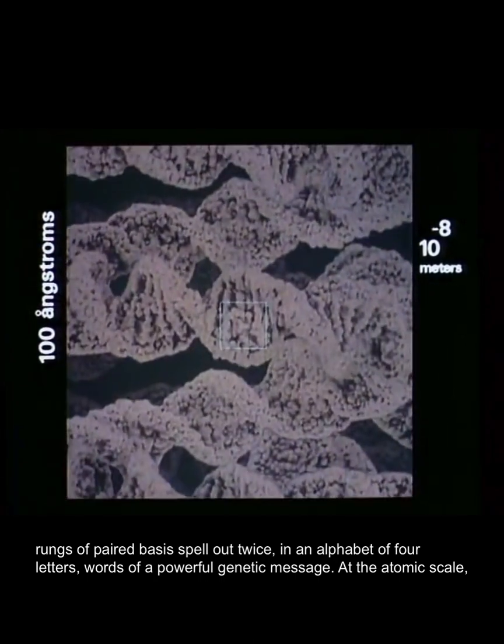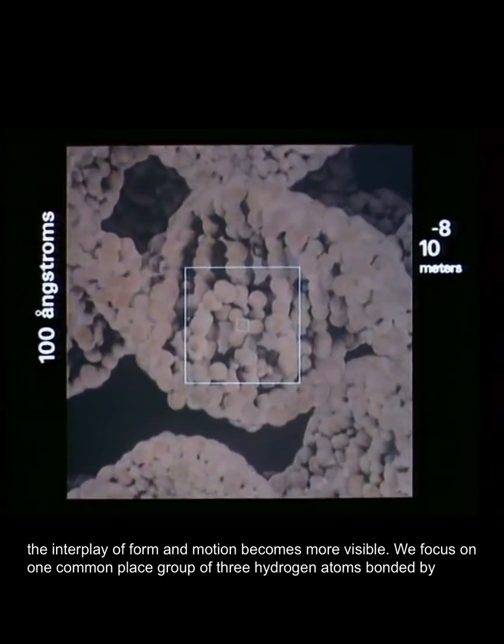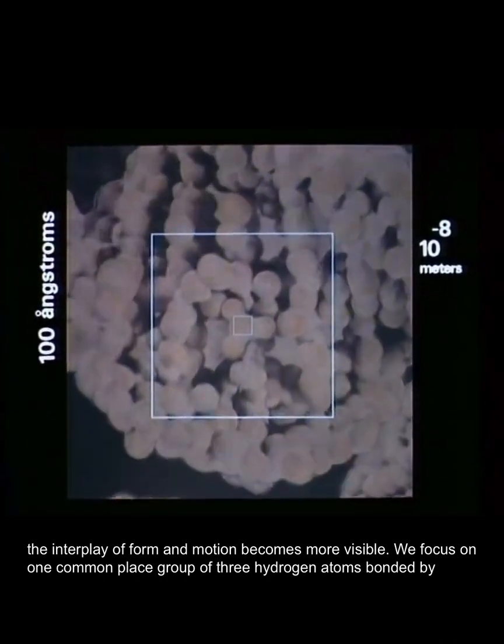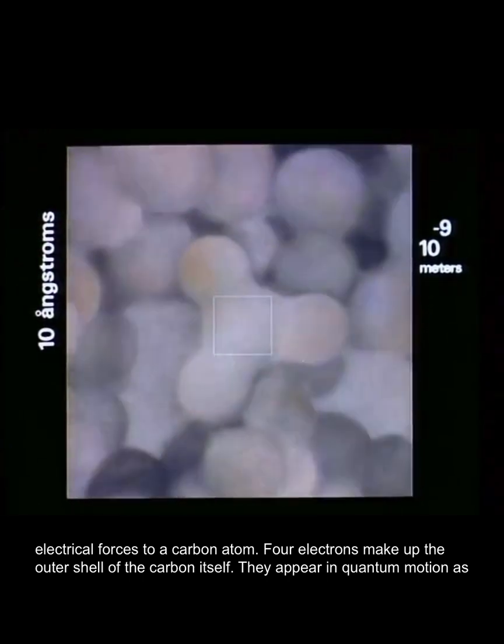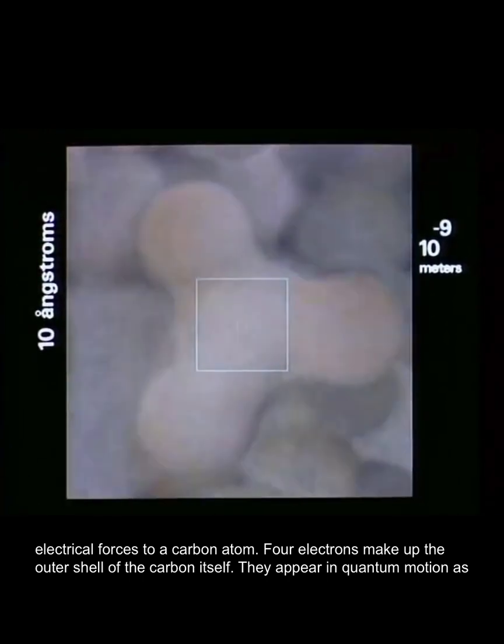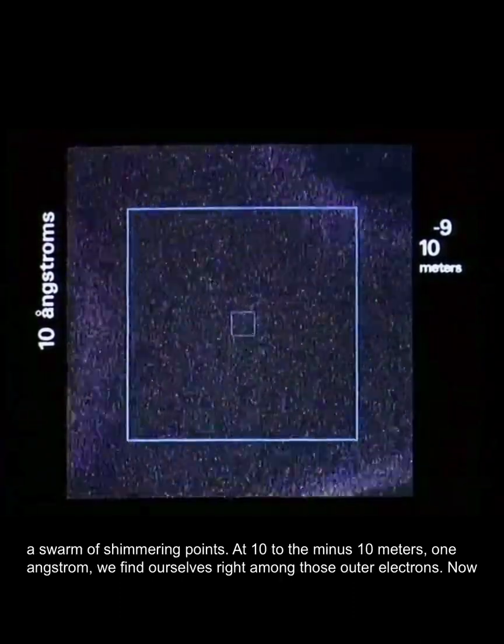At the atomic scale, the interplay of form and motion becomes more visible. We focus on one commonplace group of three hydrogen atoms bonded by electrical forces to a carbon atom. Four electrons make up the outer shell of the carbon itself. They appear in quantum motion as a swarm of shimmering points.